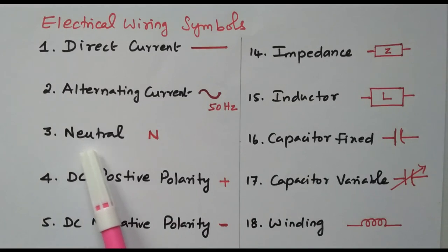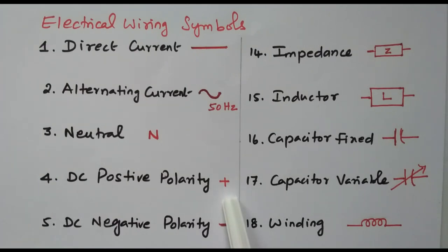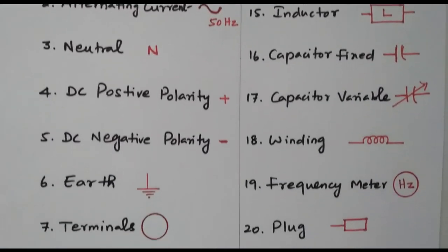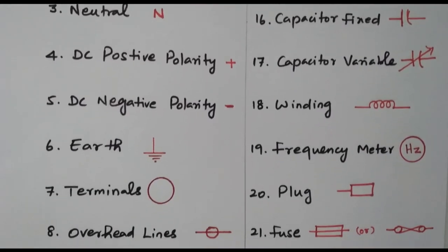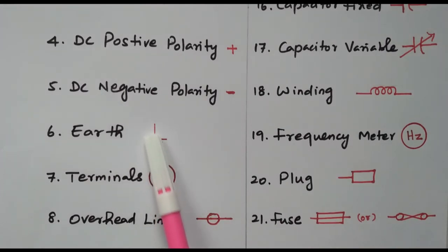Then we have neutral, represented by N. In case of DC, we have positive polarity and negative polarity, given by plus and minus. In AC supply, earth is available — the earth point — represented by this symbol.